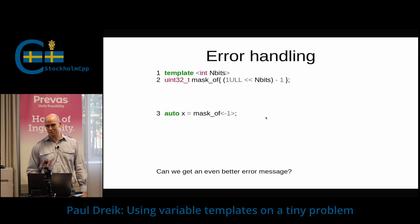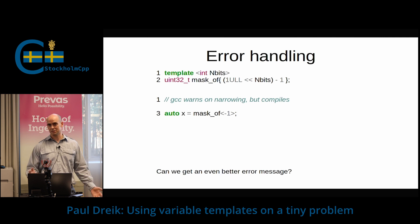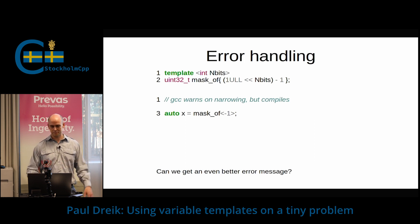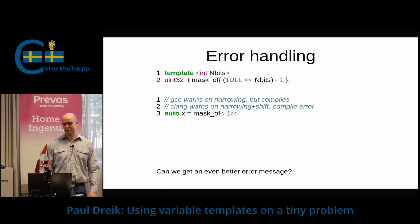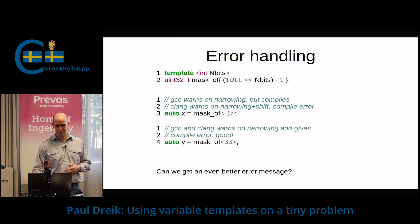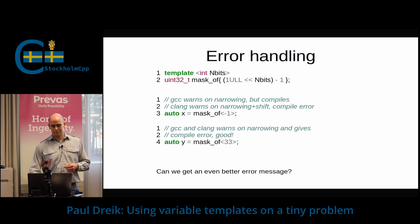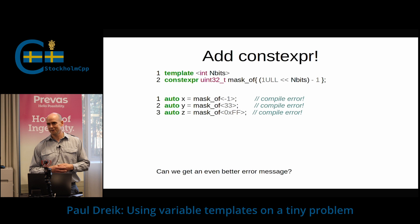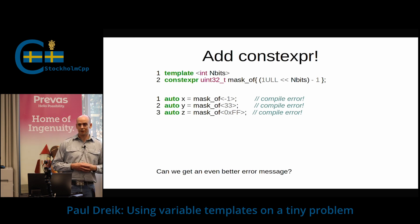So what happens when we misuse it? If we try minus one, we now get a warning on GCC, which complains about narrowing — when you try to fit a value that doesn't fit, it has too many bits. But it still compiles, so that's bad. Clang also warns; it also warns about the negative shift. Shifting a negative number of bits is undefined behavior. And Clang gives us a compiler error. So that's good. And if we have 33 bits, we get a compiler error for both Clang and GCC.